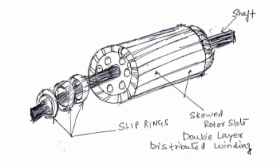Looking at the construction of a wound rotor induction motor, you can see that the windings are internally star-connected and three windings — that is the R, Y, B or the three phases — are brought out and connected to three slip rings. These slip rings enable the addition of external resistance to the rotor circuit.